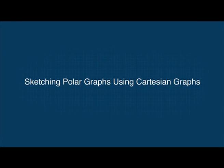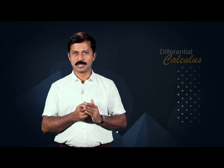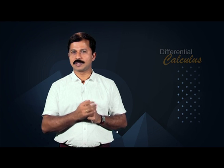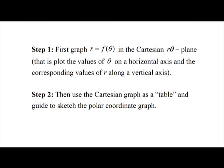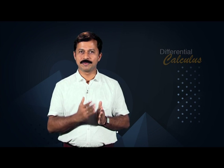We now discuss sketching polar graphs using Cartesian graphs. There is an alternative way to draw polar graphs using the Cartesian r-theta plane. Step 1: first graph r is equal to f(theta) in the Cartesian r-theta plane, plotting values of theta on a horizontal axis and corresponding values of r along a vertical axis. Step 2: then use the Cartesian graph as a table and guide to sketch the polar coordinate graph. This method is better than simple point plotting because the Cartesian graph shows at a glance where r is positive, negative, and non-existent, as well as where r is increasing and decreasing.